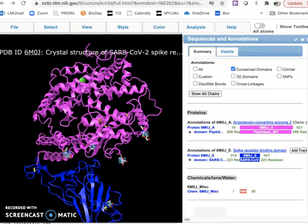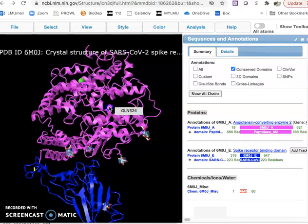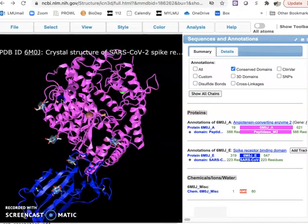Hi everybody, I just wanted to go over some features of iCN3D that we practiced using last week that I think may be helpful for your upcoming project. The first thing we did is to visualize the AC2 receptor in pink and the spike protein, part of the spike protein, in blue.